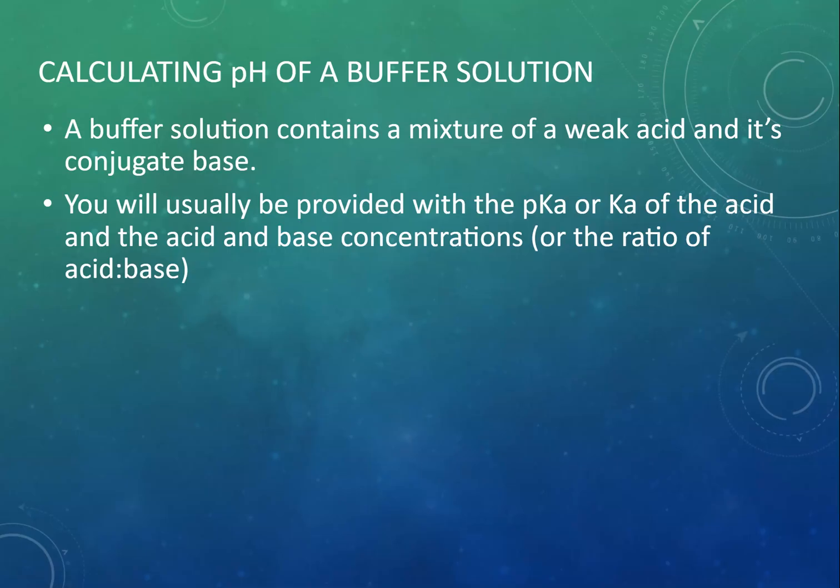You will have some concentrations, either the concentration of the acid and its conjugate base or perhaps the ratio thereof, or perhaps you've been given the pH and asked to work out the ratio of acid to base. In all cases you need to come back to that expression for Ka. Remember that Ka is equal to the concentration of the hydronium ion times the concentration of the conjugate base divided by the concentration of the undissociated acid.